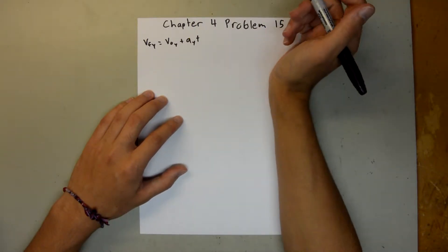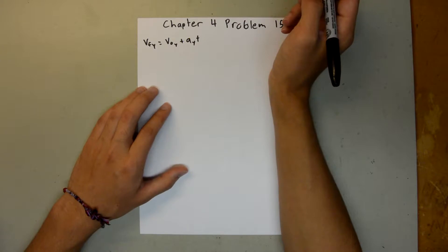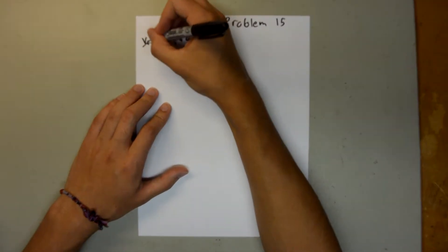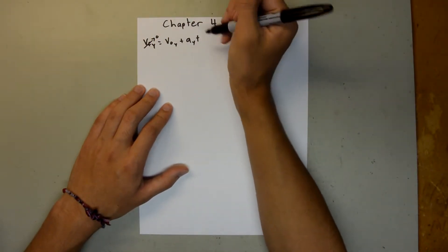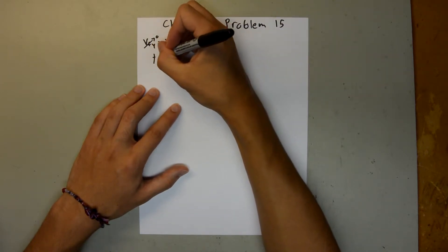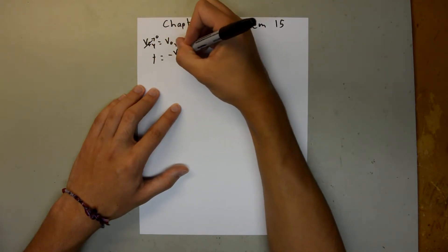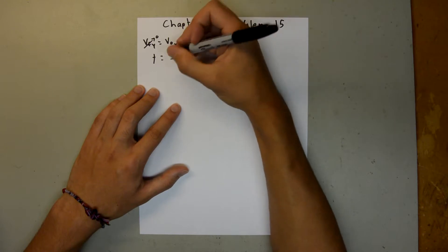And since the cart is at its maximum y value, there's not going to be any velocity in the y direction, so our final y velocity is 0. And then we can rearrange this for t, and say t is equal to negative v0y over ay.